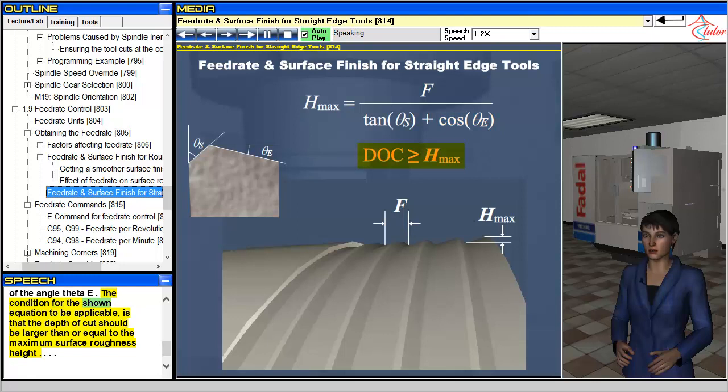The condition for the shown equation to be applicable is that the depth of cut should be larger than or equal to the maximum surface roughness height.